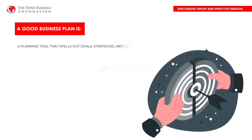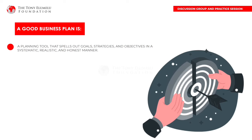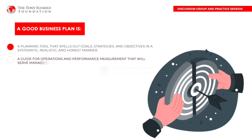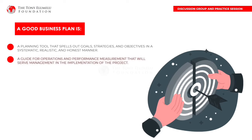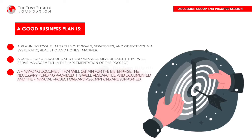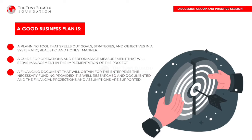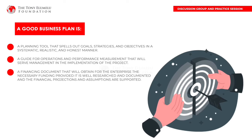A good business plan is: a planning tool that spells out goals, strategies, and objectives in a systematic, realistic, and honest manner; a guide for operations and performance measurement that will serve management in the implementation of the project; and a financing document that will obtain for the enterprise the necessary funding, provided it is well researched and documented and the financial projections and assumptions are supported.